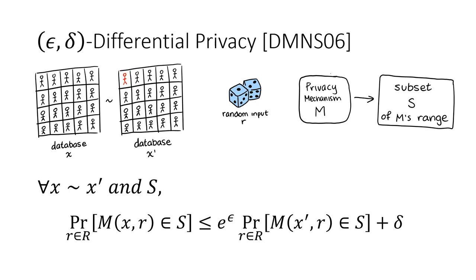Formally, we're going to call a pair of databases that differ only in a single individual's data a pair of neighboring databases. Defining differential privacy requires a few different parts: a pair of neighboring databases x and x prime, some privacy mechanism M that takes in a random input R, and some subset S of M's range of possible outputs. We say that M is epsilon-delta differentially private if for all possible pairs of neighboring databases and all possible subsets S, the probability that M would output a value in S when run on one database versus the other is relatively similar, quantified by the parameters epsilon and delta.